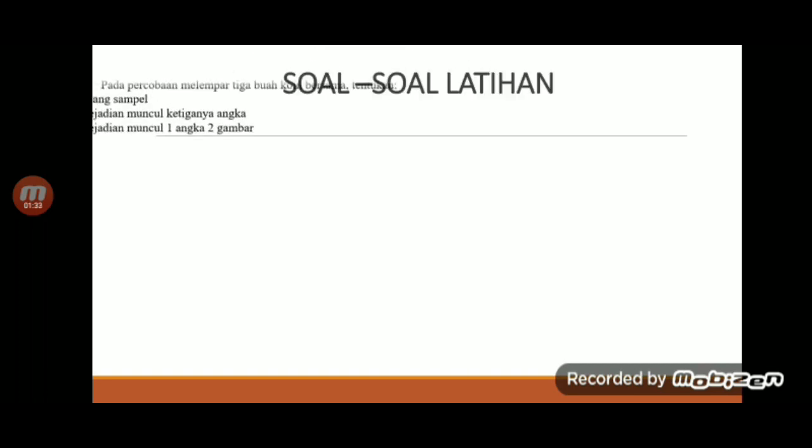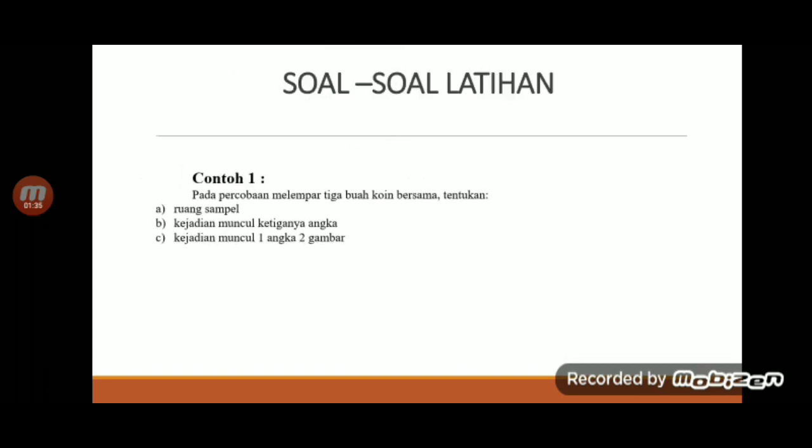Untuk soal-soal yang pertama, pada percobaan melempar tiga buah koin bersama, tentukan yang pertama adalah ruang sampel, yang B kejadian muncul ketiga angka, yang C kejadian muncul satu angka dua gambar.